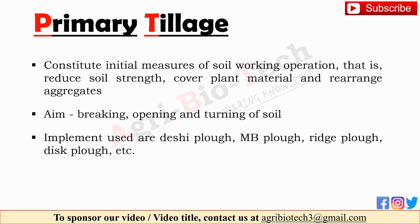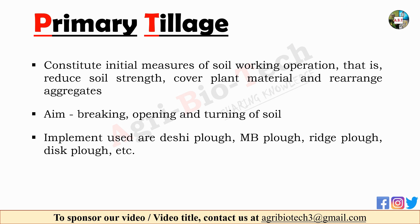The first type is primary tillage. It is the tillage operation which constitutes the initial measures of soil working. It is normally designed to reduce soil strength, cover the plant material, and rearrange the aggregates, mainly for seedbed preparation. The main aim of primary tillage is breaking, opening and turning of soil. Primary tillage implements include desi plow, ambi plow, ridge plow, disc plow, etc.